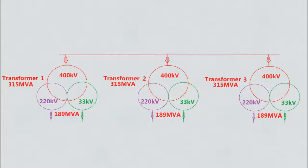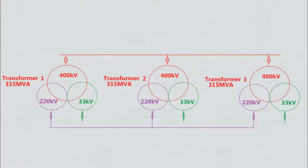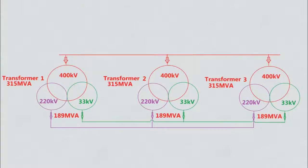Now, if we have to take Transformer 3 out of service for some work, this is the procedure we follow. First, connect all 220 kV sides of all 3 transformers, then connect all 33 kV sides of all 3 transformers — now the load is evenly distributed. Next, turn off the 220 kV and 33 kV side of Transformer 3, and then turn off the 400 kV side of Transformer 3. Transformer 3 will be out of service and its load will shift onto Transformer 1 and Transformer 2, giving 283.5 MVA load each.